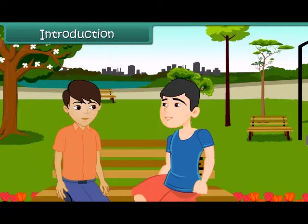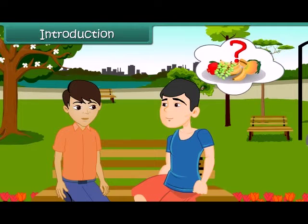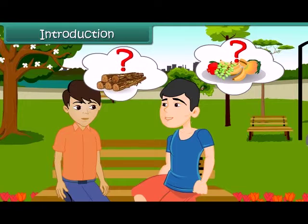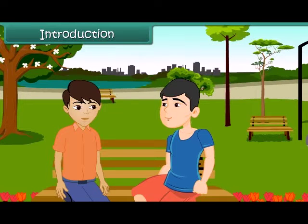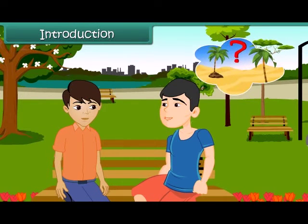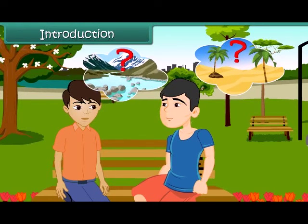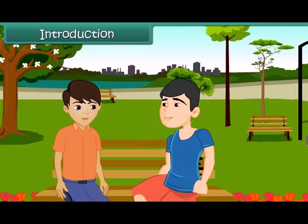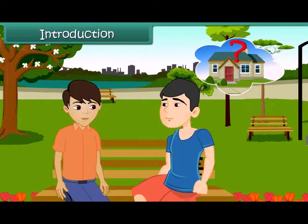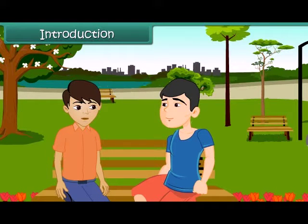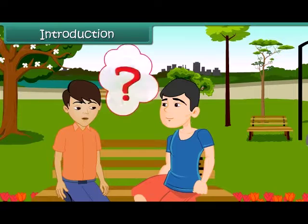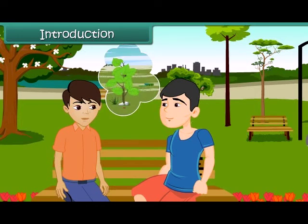She asked what they are which give us fruits, give us wood, which can grow on land as well as in water, and which are found in homes as well as in forests. It's simple, dear. They are called plants.